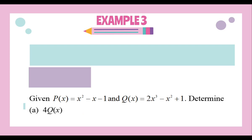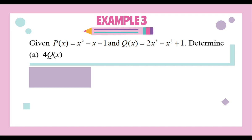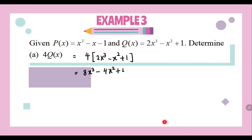Let's look at Example 3. Given P(x) = x² - x - 1 and Q(x) = 2x³ - x² + 1, determine 4Q(x). This is scalar multiplication of a polynomial. So, 4 multiplied by Q(x) — Q(x) is 2x³ - x² + 1 — gives us 8x³ - 4x² + 4.